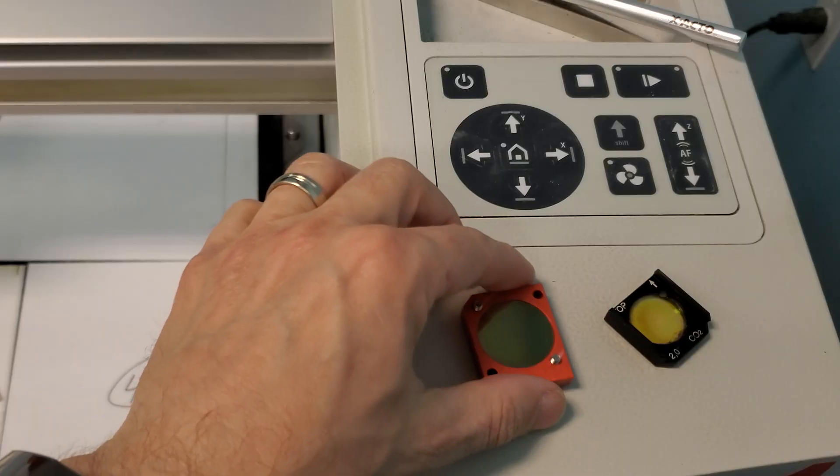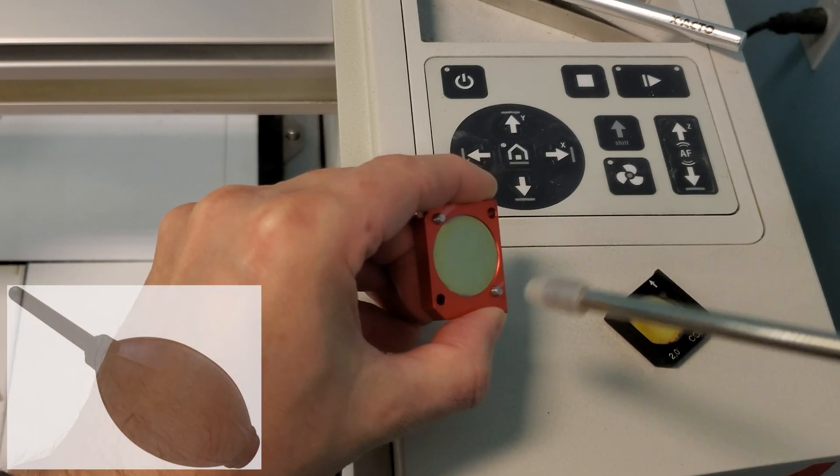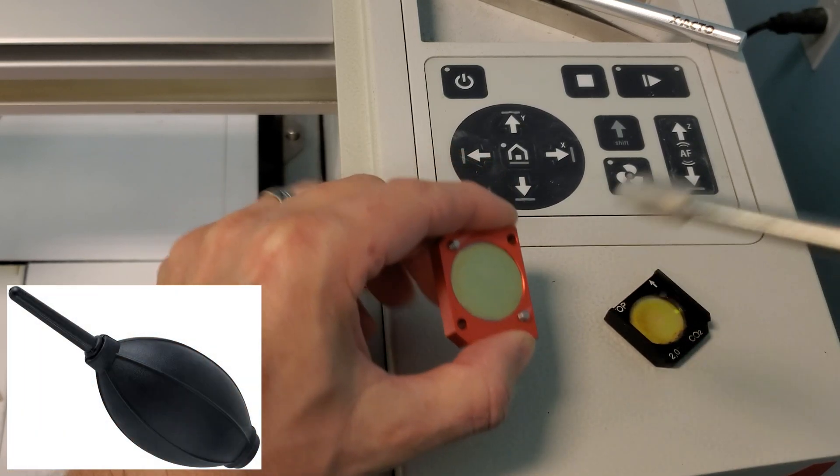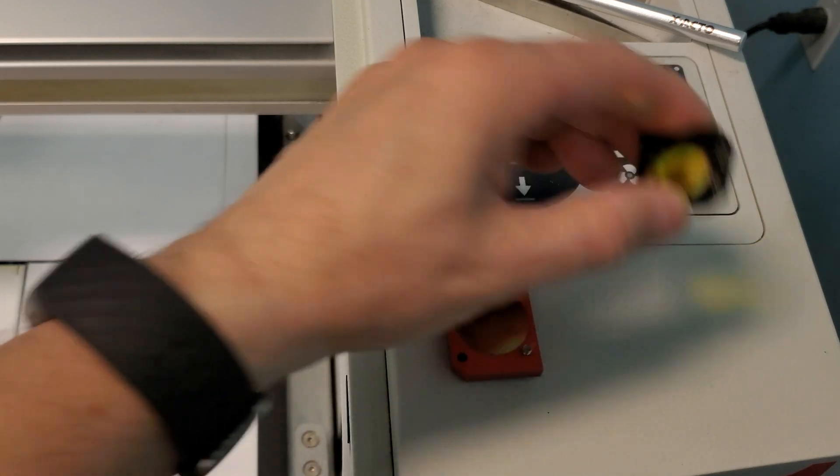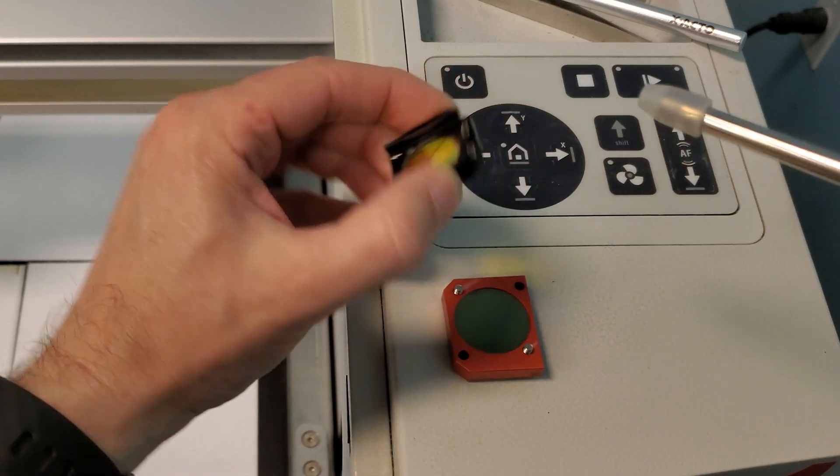Start by blowing off your lens and mirrors. In my experience, those little hand-squeezed dusters do work, but not really that well. I've used them for camera lenses back in the day, and I never was a big fan of them. And for this application, I don't think they dislodge really stuck on dust.